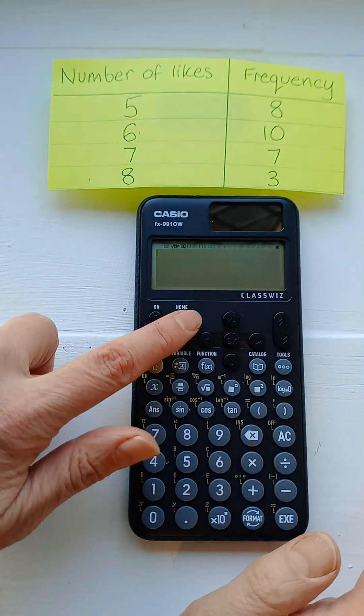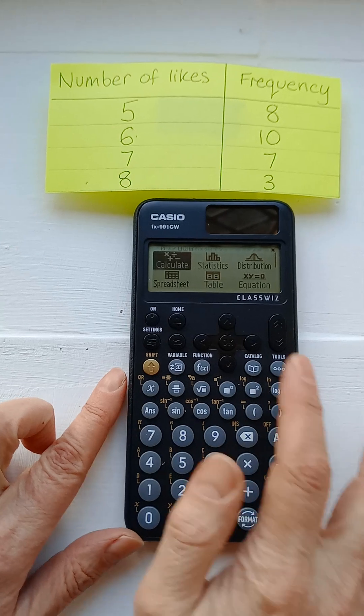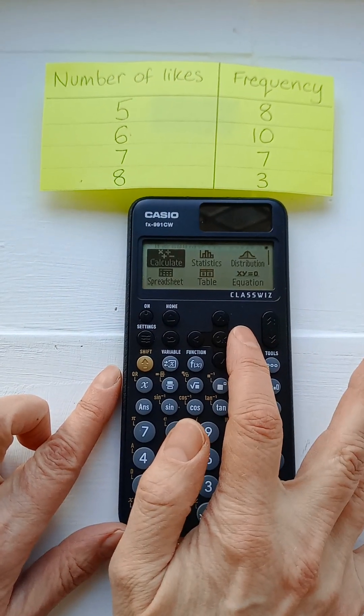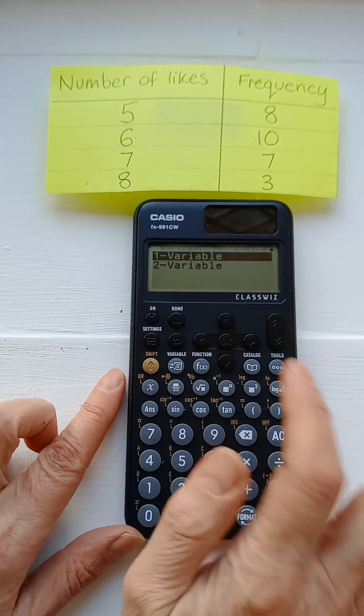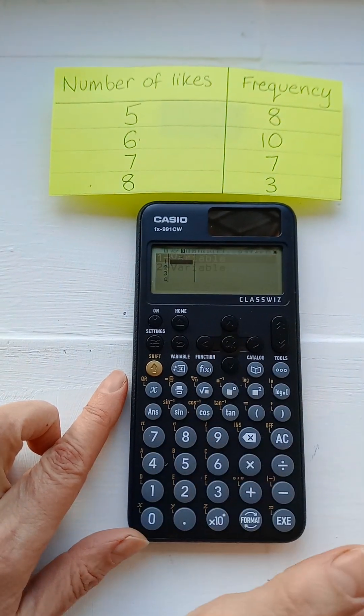Press home, scroll across one to statistics mode, press OK. Now choose one variable, OK.